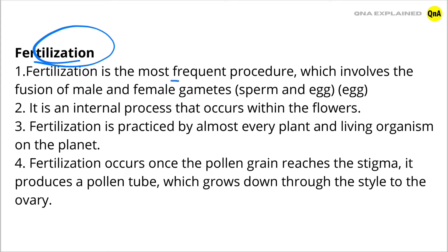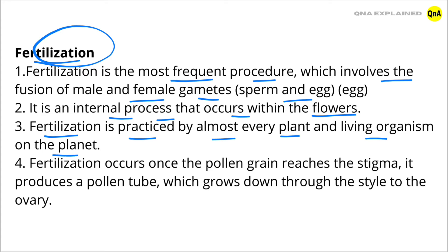Fertilization is the most frequent procedure which involves the fusion of male and female gametes, that is called sperm and egg. It is an internal process that occurs within the flowers. Fertilization is practiced by almost every plant and living organism on the planet. Fertilization occurs once the pollen grain reaches the stigma. It produces a pollen tube which grows down through the style to the ovary.